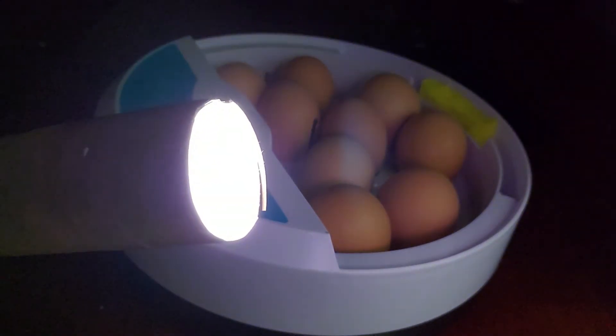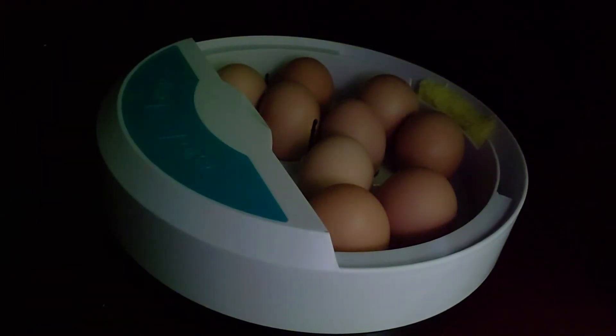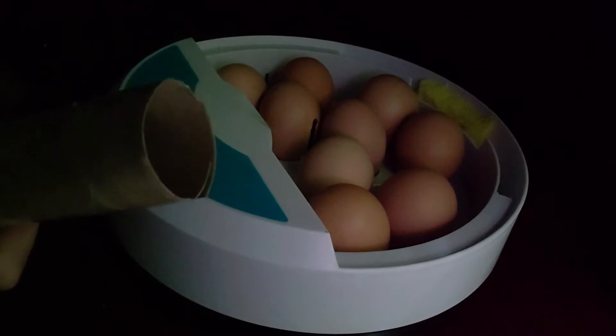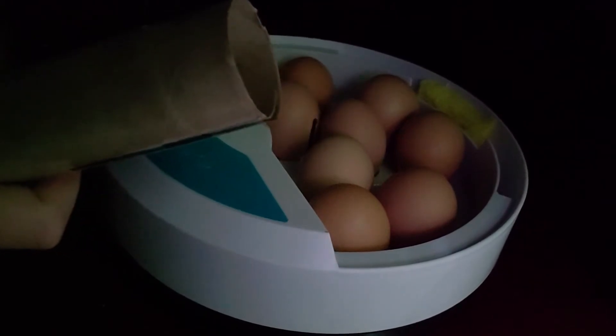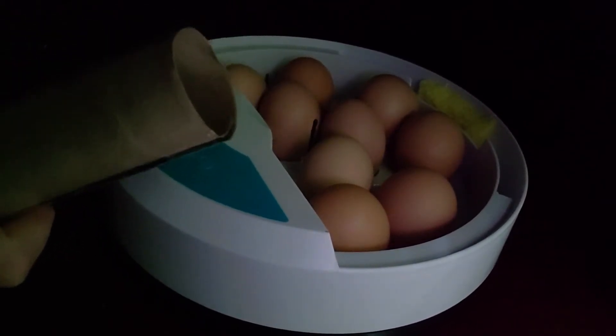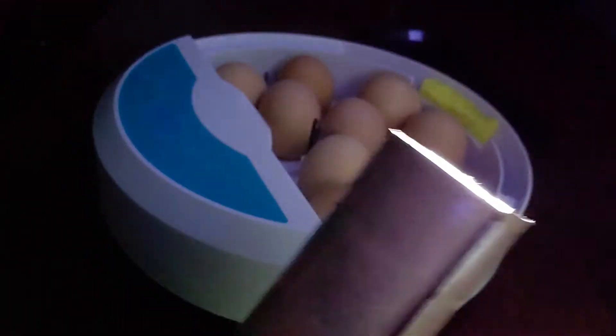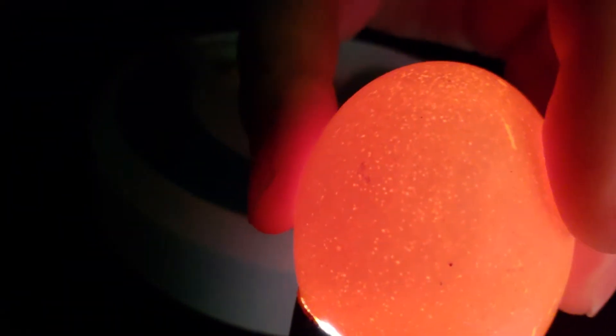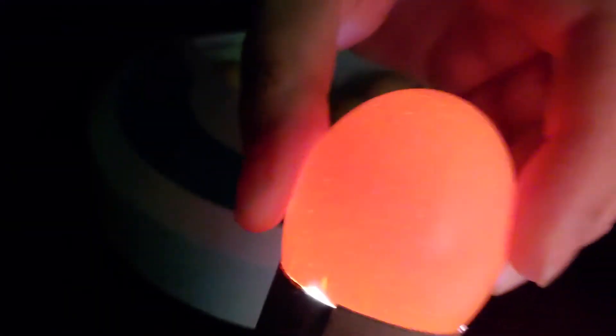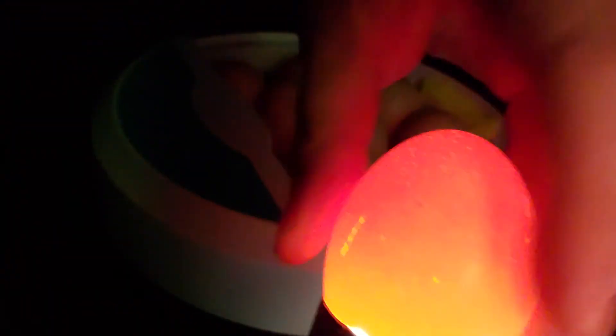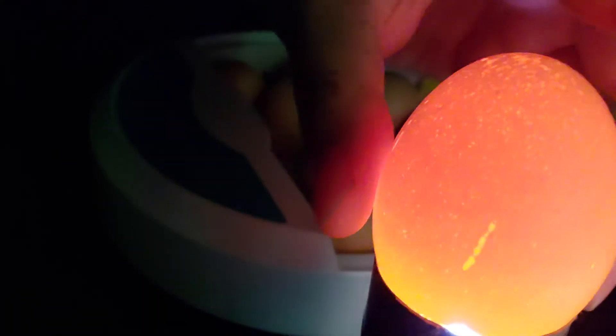I'm gonna take a chicken egg that's been fertilized but hasn't been incubated at all and we can just compare that against the rest. So here is an egg that has not been incubated at all and you can see that the light just goes right through the egg and there's really nothing inside of there.